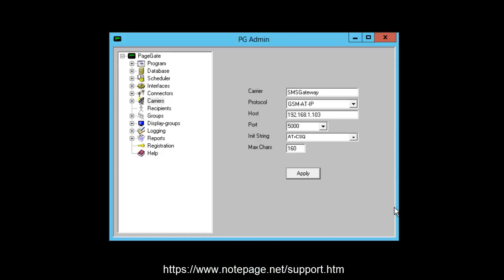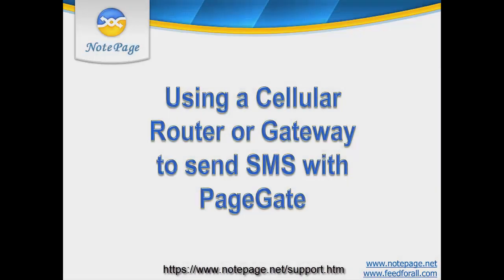Set the max characters field to 160, and then click Apply. This concludes the video tutorial on how to use a cellular gateway or router to send text messages with PageGate. For more tutorials, including how to use a cellular modem to send text messages, please visit our website at www.notepage.net.